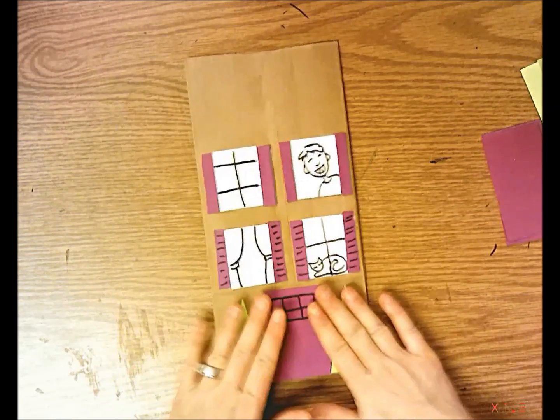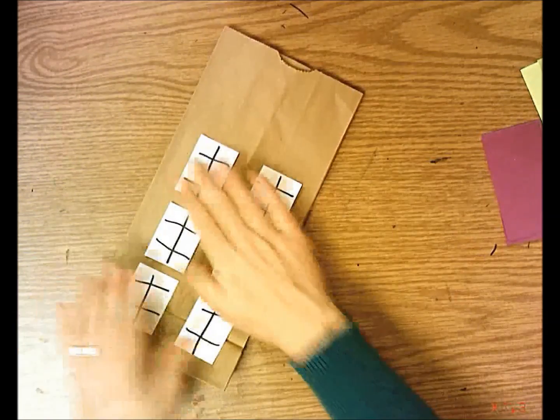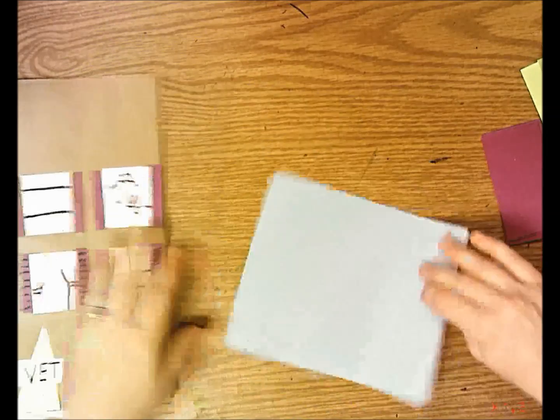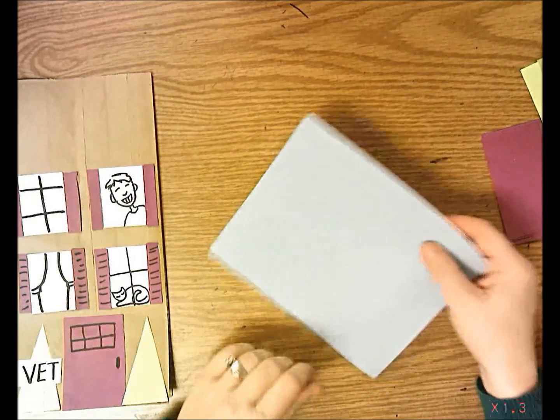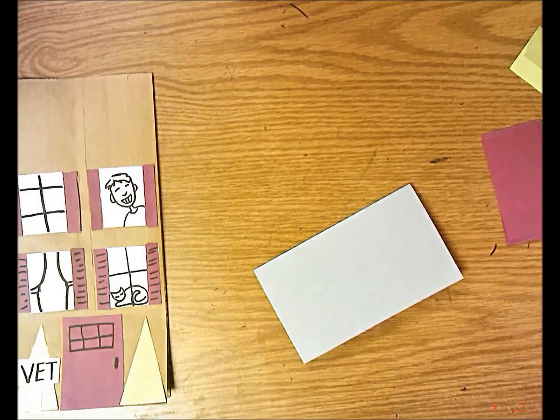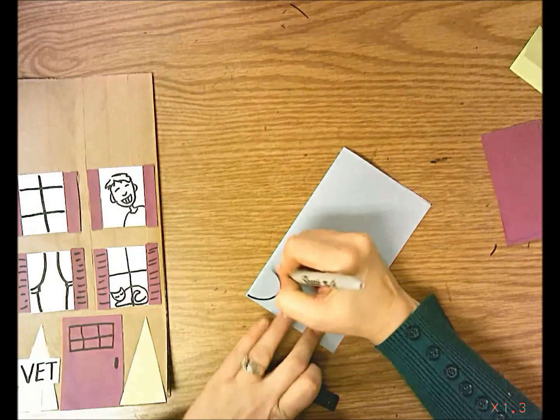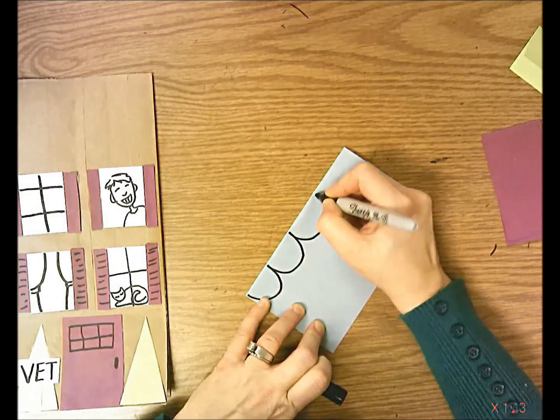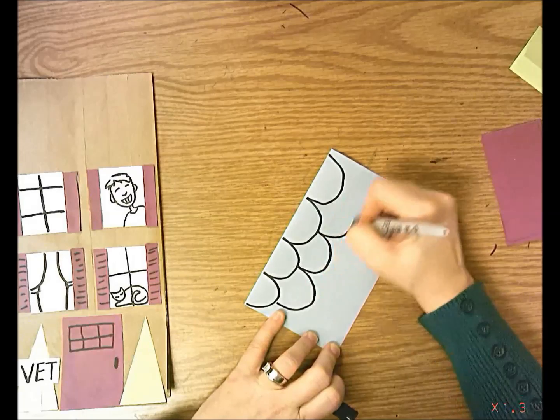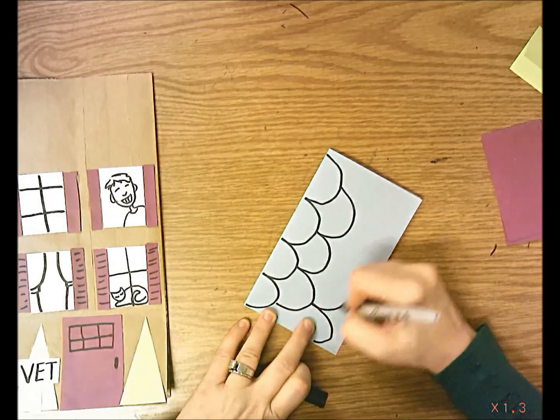Now that I have the front and back of my house designed, I'm ready to do the roof. You're going to choose a piece of paper for your roof, fold it in half, and draw the shingles. Draw them nice and big to fill the space. Draw a big scalloped line across the paper.